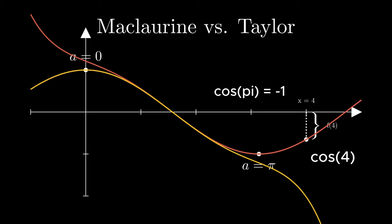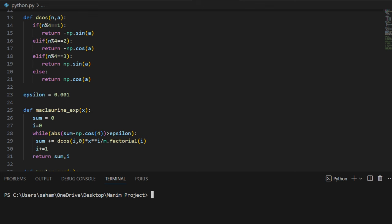Let us further illustrate this concept using this Python program. So the first function we have is dcos, which evaluates the derivative of the cosine function at a. The underlying logic behind the function is the recurrence nature of higher derivatives of the cos function.